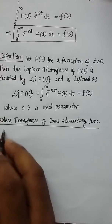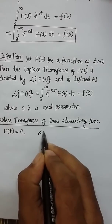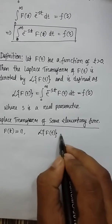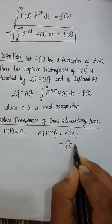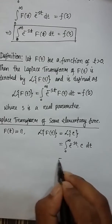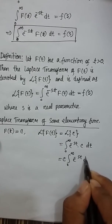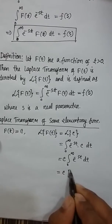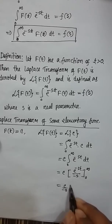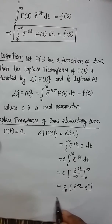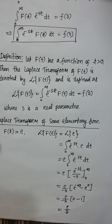Now we will see Laplace transforms of elementary functions. For example, if f(t) equals any constant c, then the Laplace transform is the integral from 0 to infinity of e to the power minus s*t times c dt. Since c is constant, it comes out of the integral, giving c times e to the power minus s*t divided by minus s, evaluated from 0 to infinity. This gives c times (0 minus 1/minus s), which equals c/s.